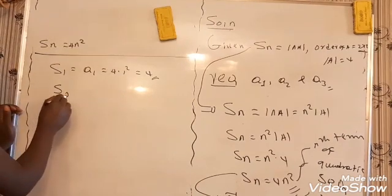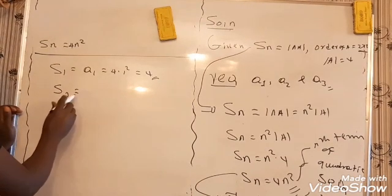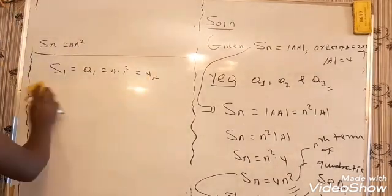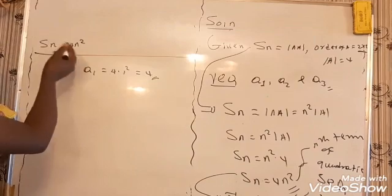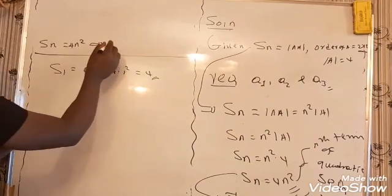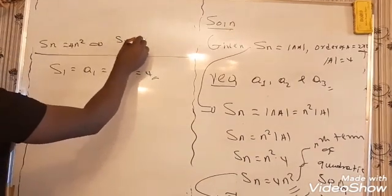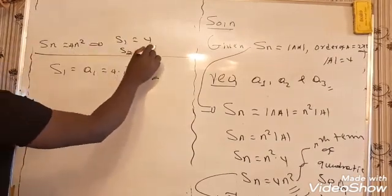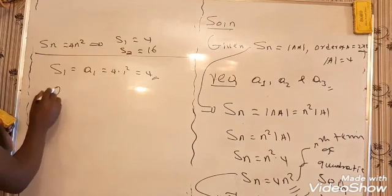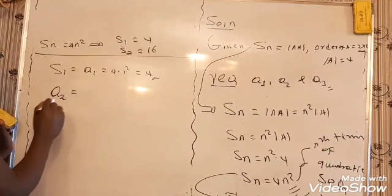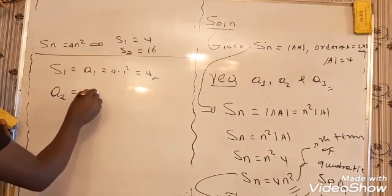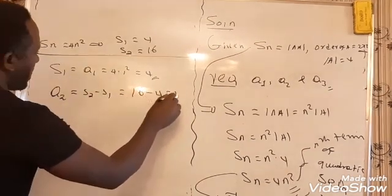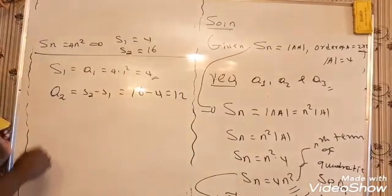S2 for the sequence — to determine S2, you know that A2 is generally S2 minus S1. S2 is 4 times 2 squared equals 16, so A2 equals S2 minus S1, which is 16 minus 4, which is 12.